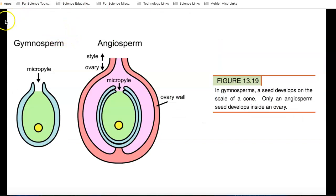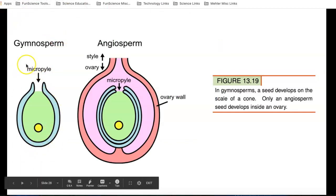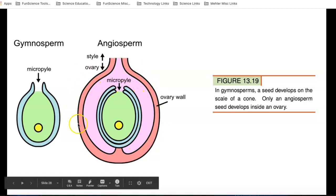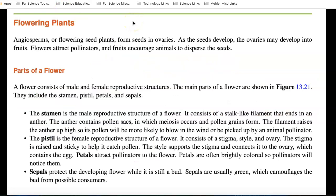We talked about this in the last section. Remember, gymnosperms are like pine cones, and a seed develops on the scale of a cone. So, this is what a gymnosperm, pine cone. The angiosperm, on the other hand, the seed develops inside the ovary. And here's the ovary wall, and this whole structure is the ovary. So, angiosperms, or flowering seed plants, form seeds in the ovary. And as they develop, the ovaries may develop into fruit. That fruit and flowers attract pollinators. The fruits encourage animals to disperse and eat the seeds.